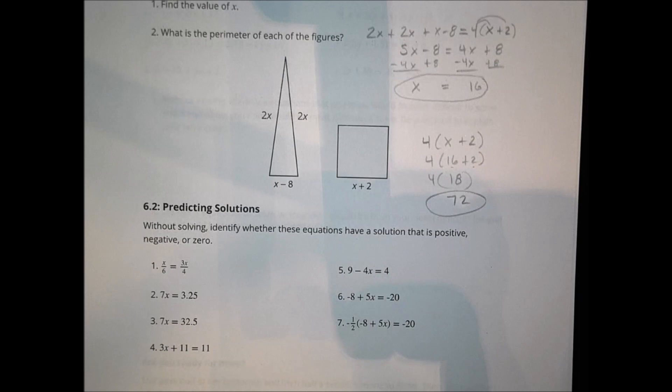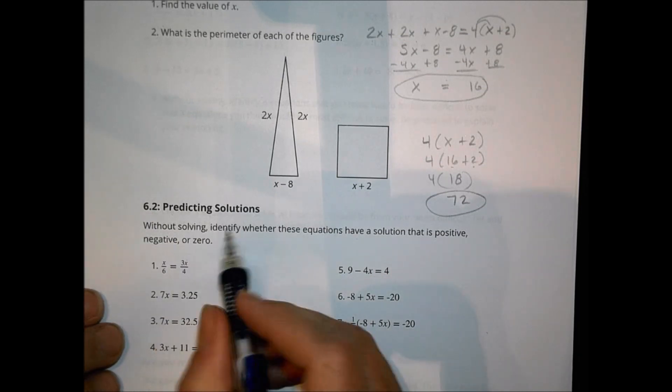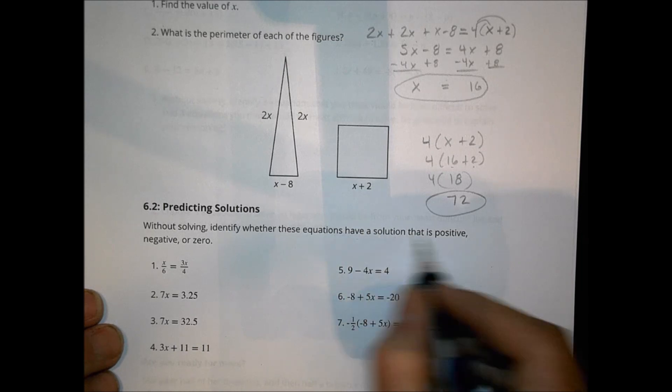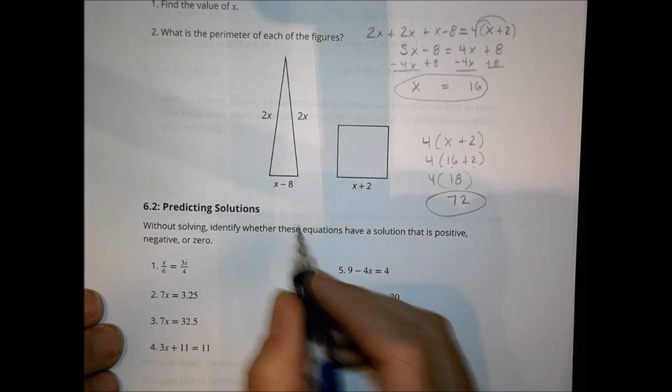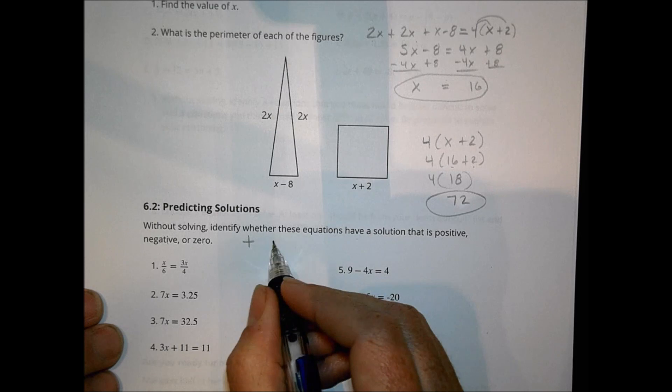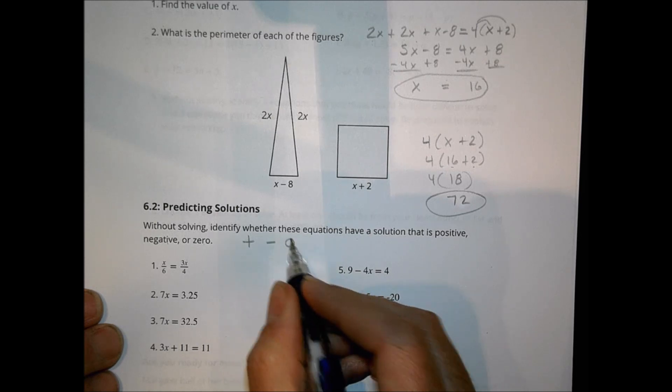When you look at activity number 2 in today's lesson, it says it's when you predict some solutions without solving to identify whether these equations have a solution that is positive, negative, or 0. We're trying to decide if it's going to be positive, or negative, or 0.